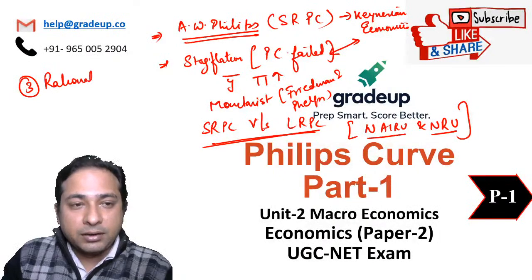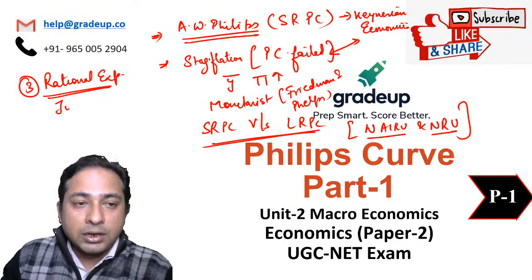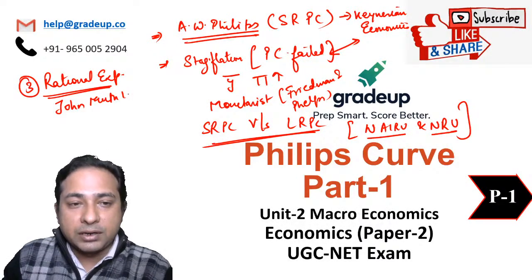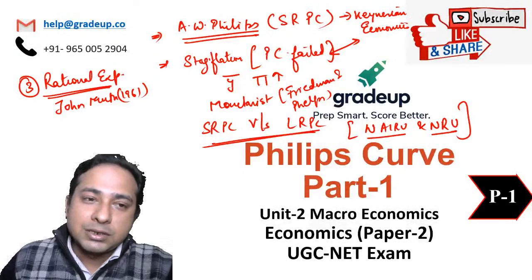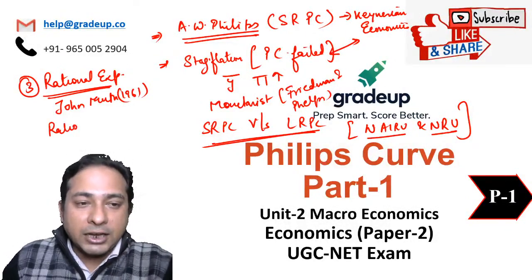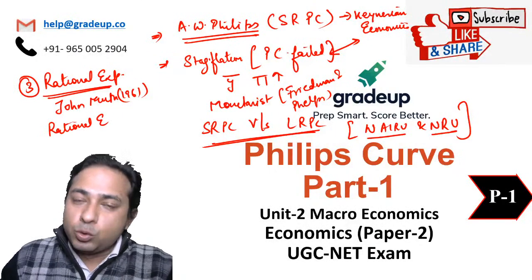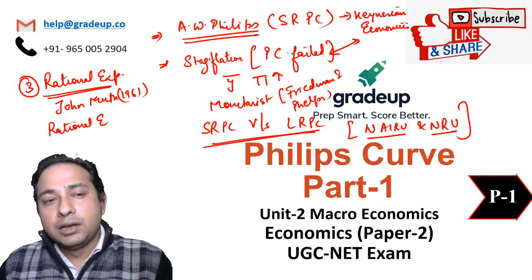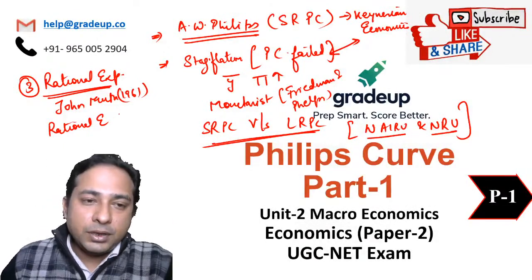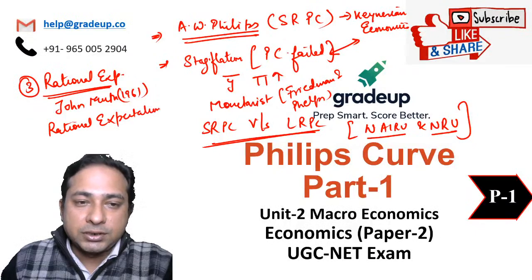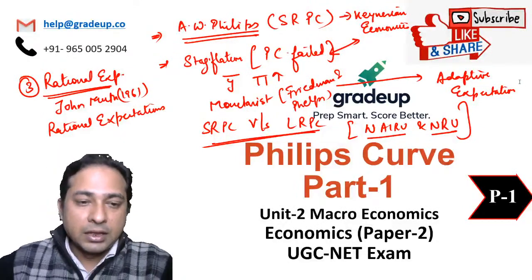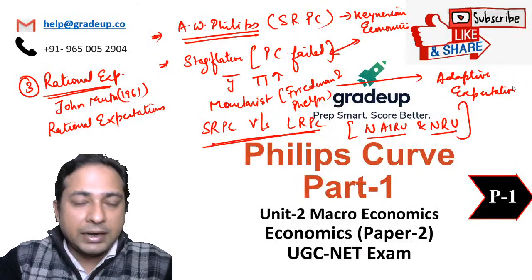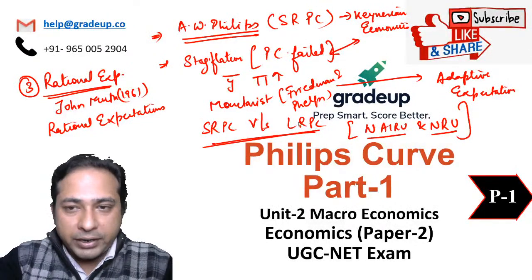The third version of the Phillips curve was given by rational expectations, introduced by John Muth in 1961. They argued that the entire Phillips curve concept is wrong and came up with the concept of rational expectations. Their school is called the Ratex model, or the New Classicals. The monetarists gave adaptive expectations, whereas the New Classicals gave rational expectations. All these terms are very important and are frequently asked in UGC NET.